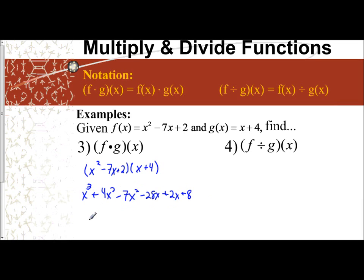So combined like terms, I get x cubed minus 3x squared, that's 4x squared minus 7x squared, minus 26x, negative 28x plus 2x, and then I have plus 8. Distribute, combine like terms. No different than multiplying, when we write it out, polynomials.